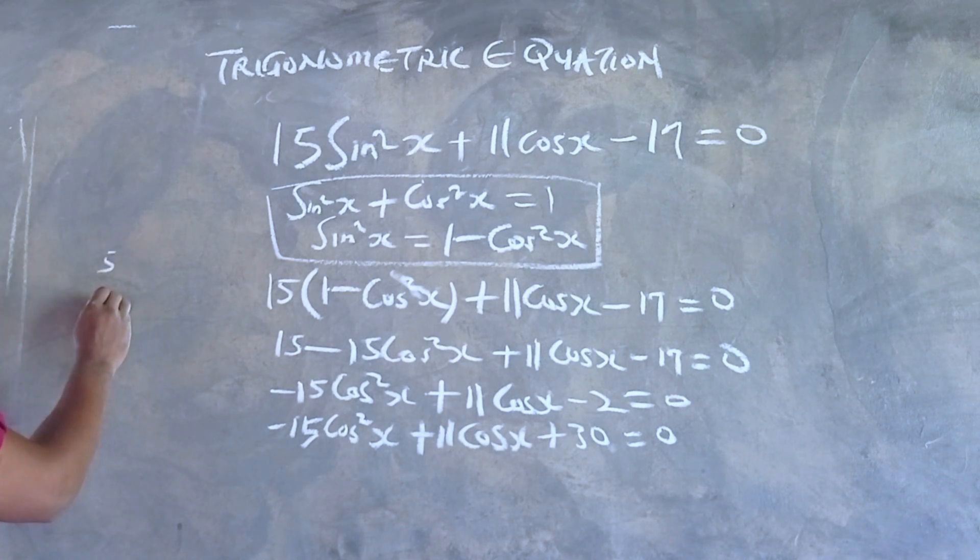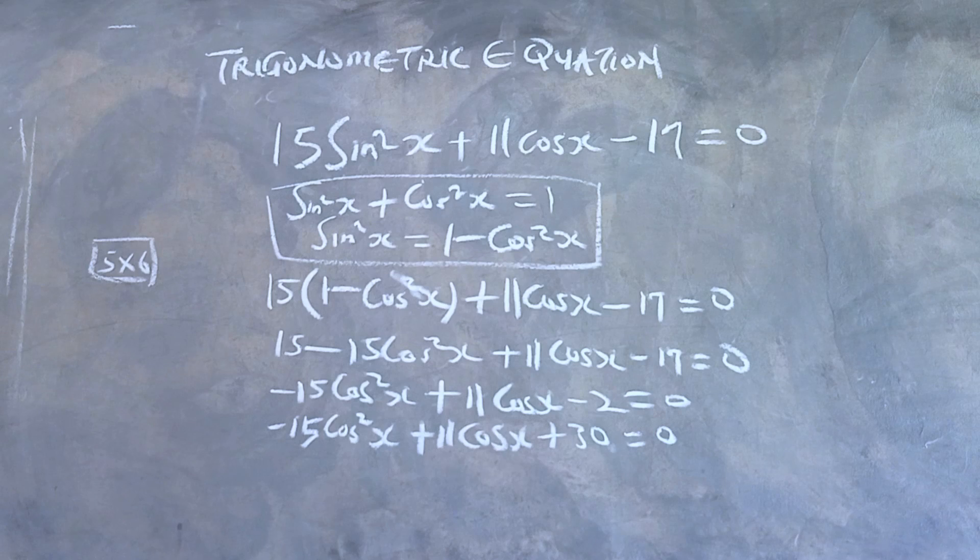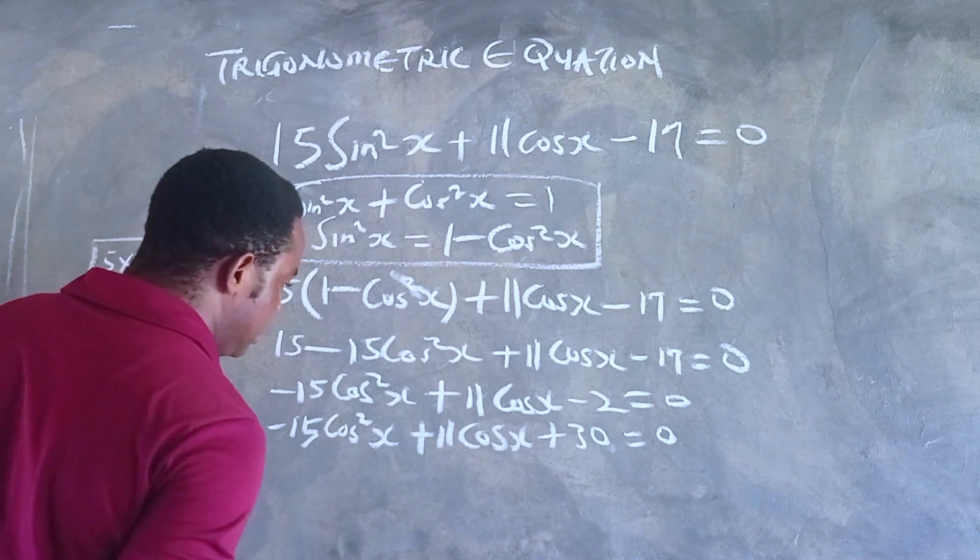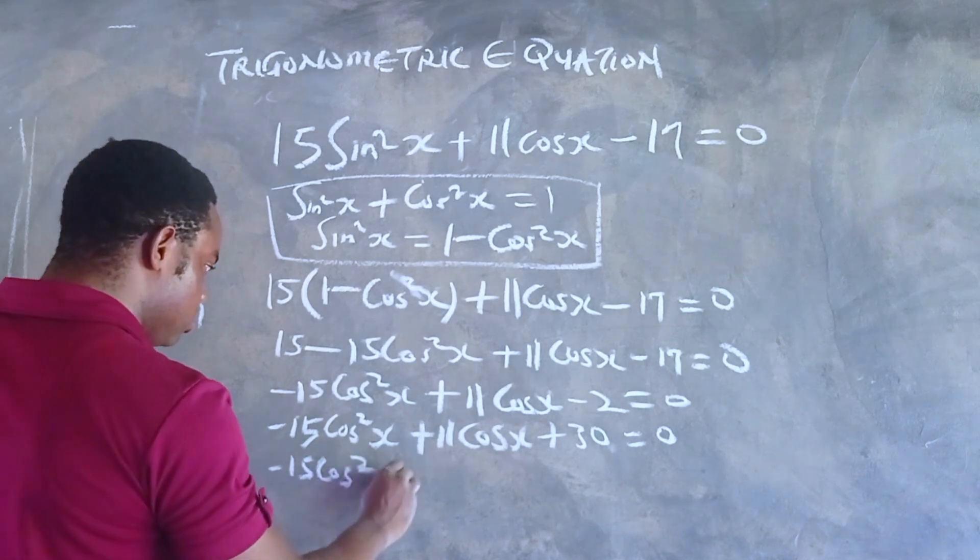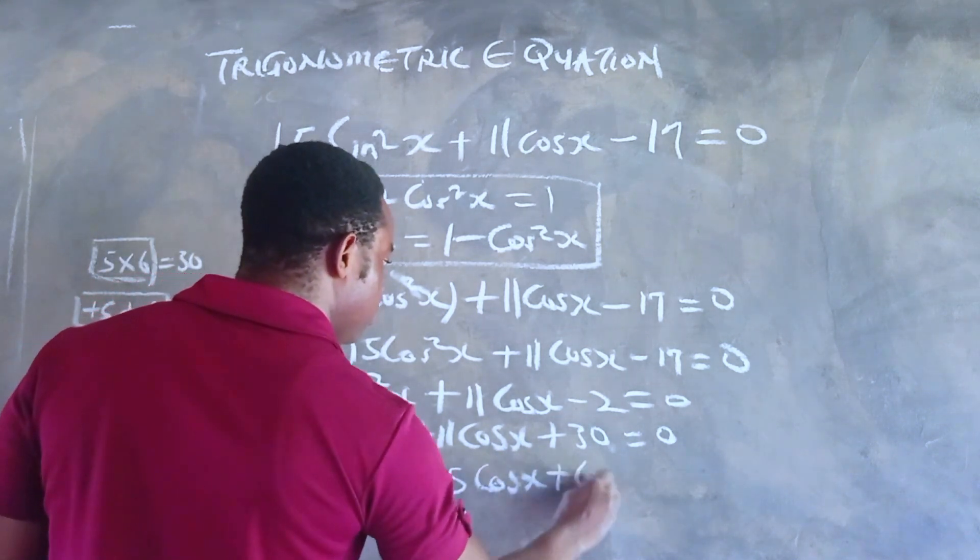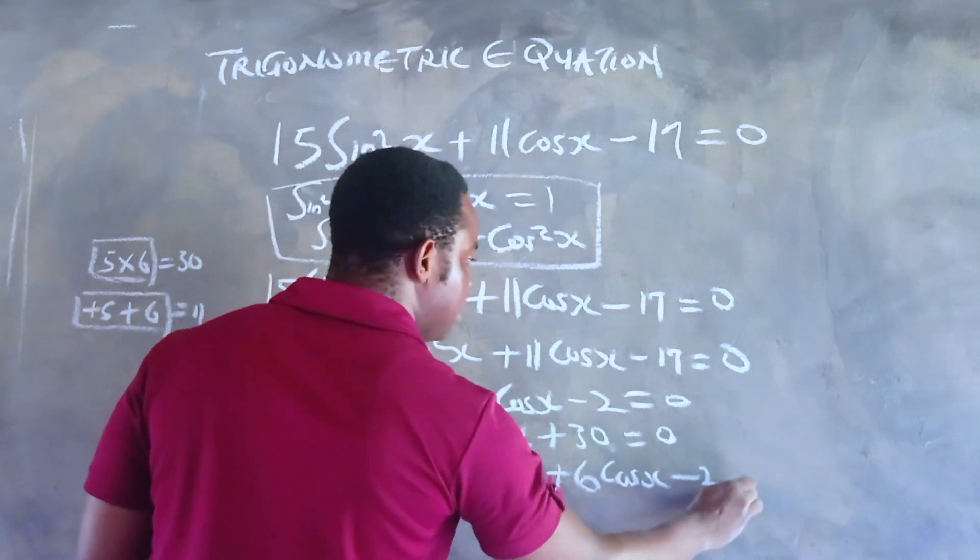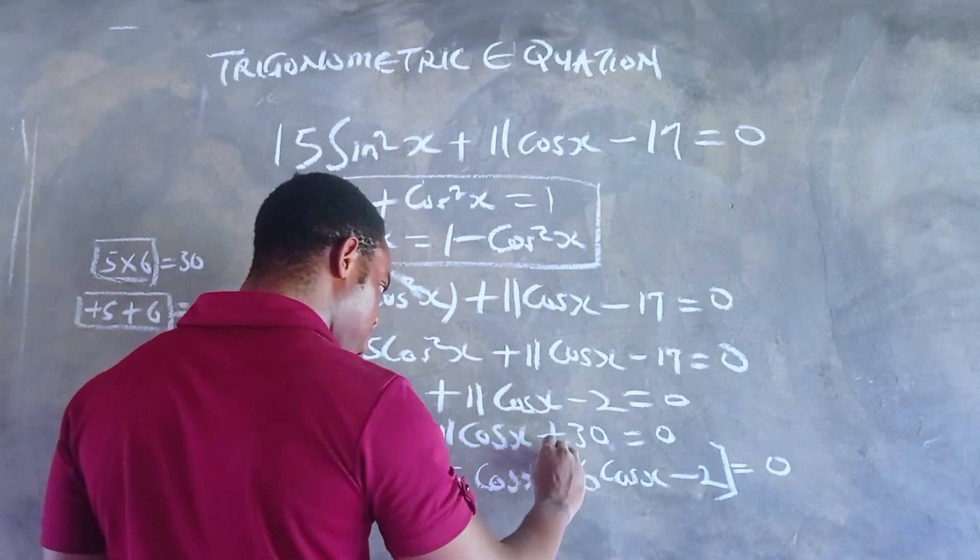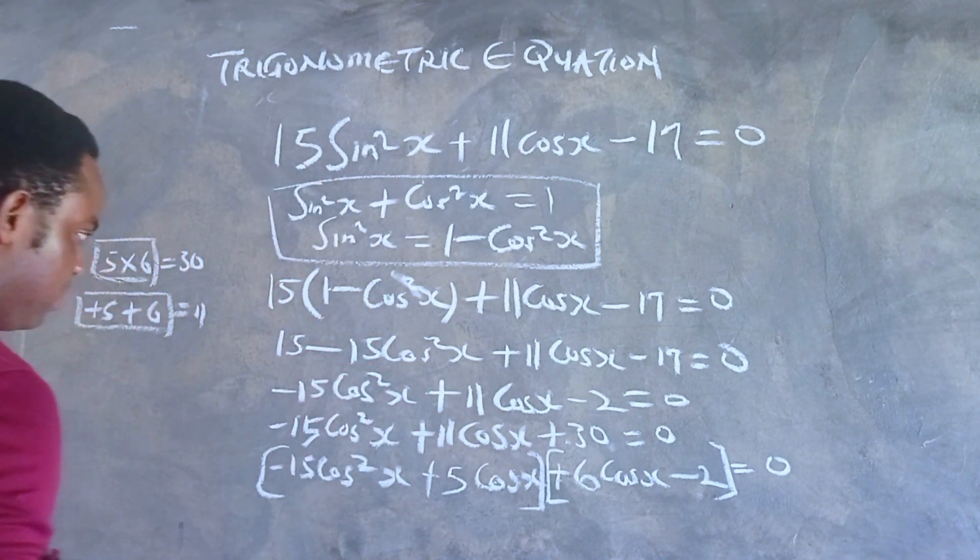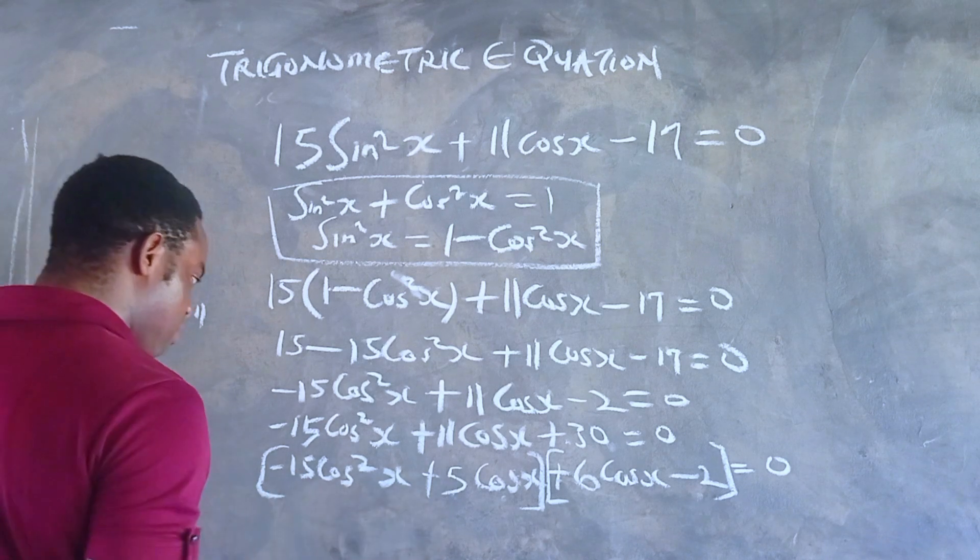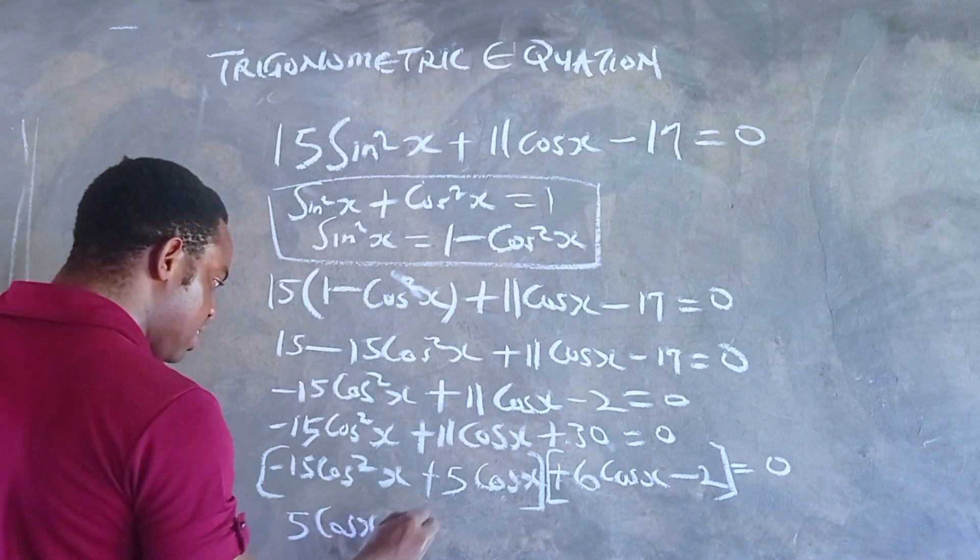We put 5cosx and 6cosx in place of 11cosx, so we have -15cos²x + 5cosx + 6cosx - 2 = 0. Let's split this into two parts so we can factor it. For the first bracket, both terms have 5cosx in common. Putting 5cosx outside the bracket, we have 5cosx(-3cosx + 1).